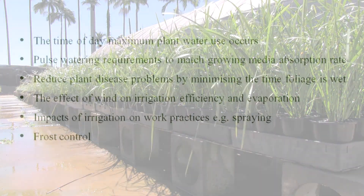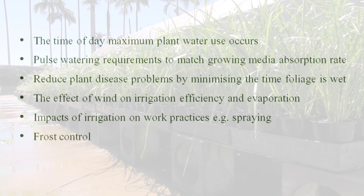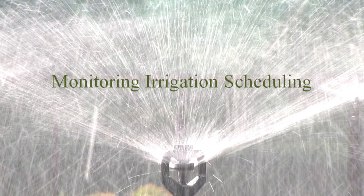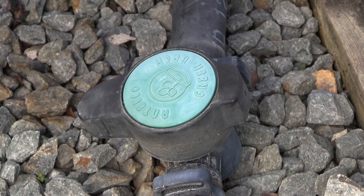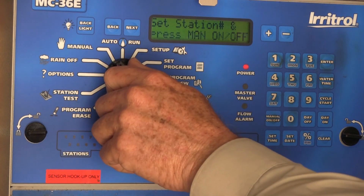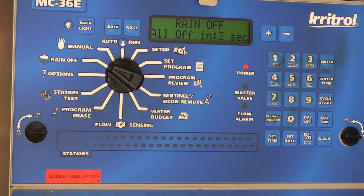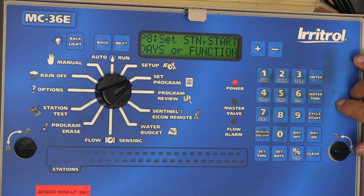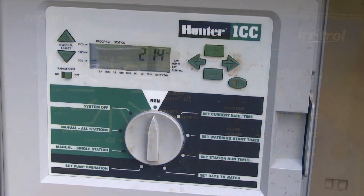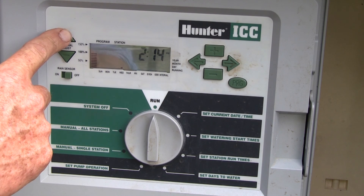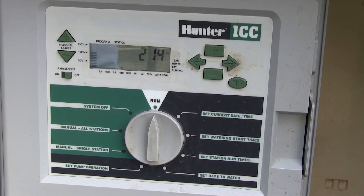There are a number of other factors that may need to be taken into account when deciding on an appropriate irrigation schedule. Irrigation scheduling can be accomplished manually but is more effective when using an irrigation controller. Irrigation controllers can be an effective way of improving irrigation scheduling, provided they are programmed and managed properly. The budgeting or percentage function on an irrigation controller can be a convenient way to change run times over the whole production area.